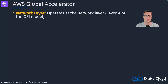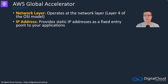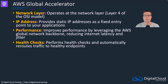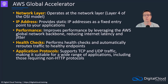This service operates at the network layer — Layer 4 of the OSI model. It provides static IP addresses as a fixed entry point for your applications; those are the anycast IP addresses, and you can bring your own as well. It improves performance by leveraging the AWS global network backbone, reducing network latency for people around the world. It also performs health checks to ensure it is routing traffic to the most optimal and healthy endpoints.